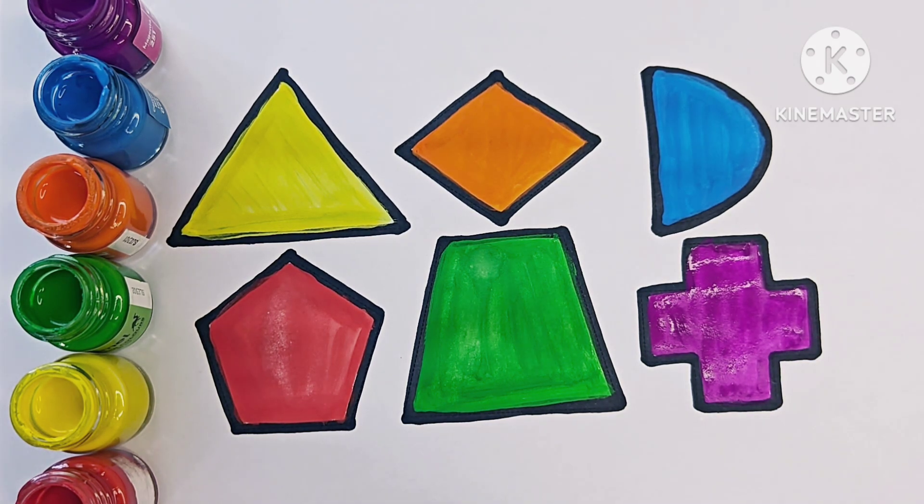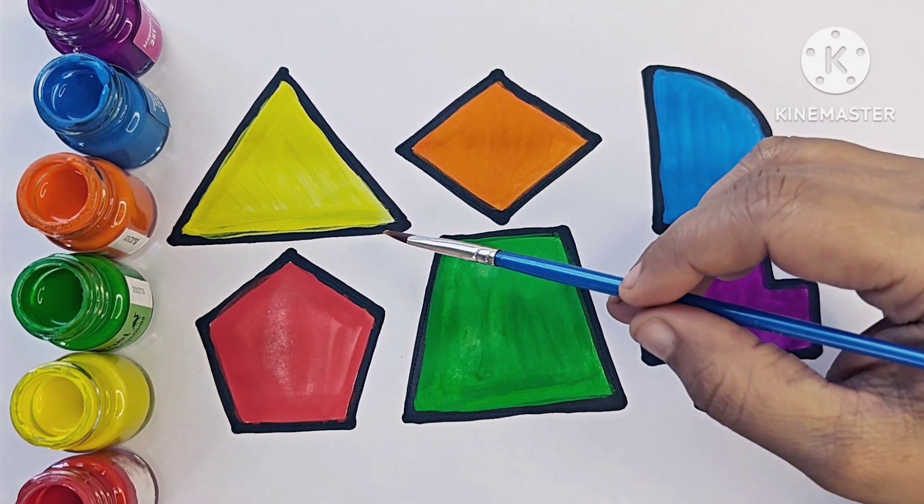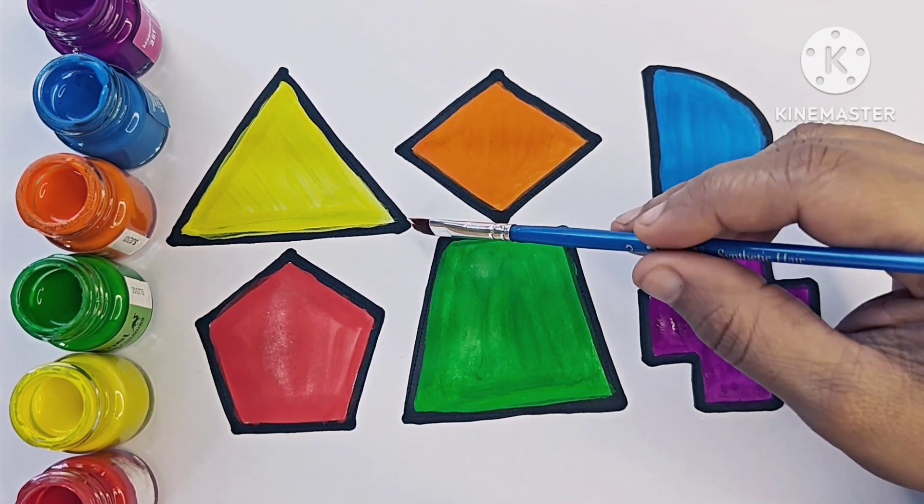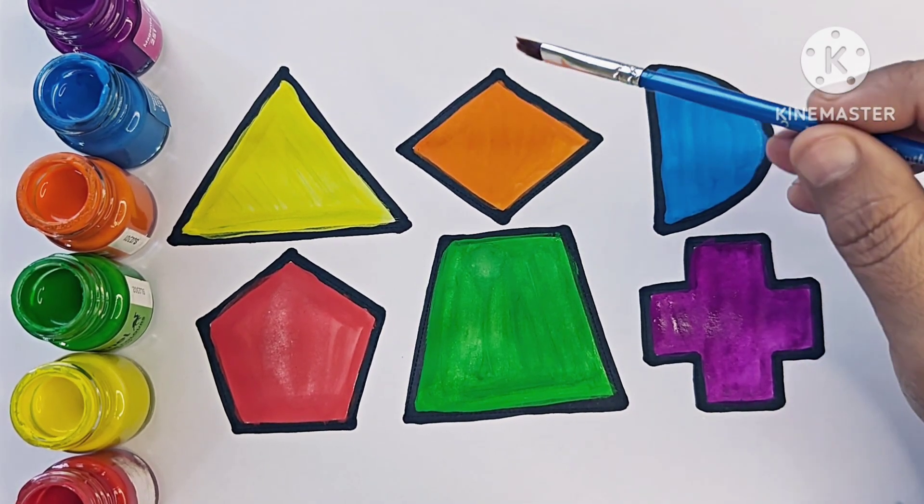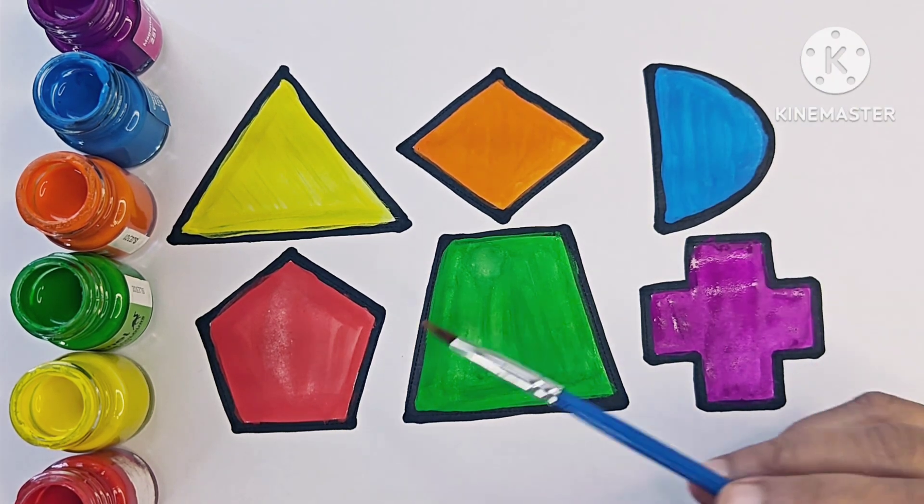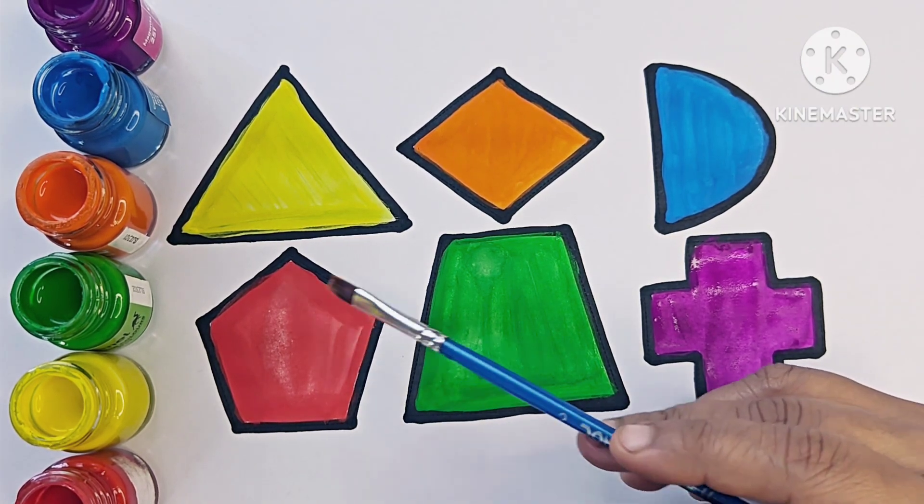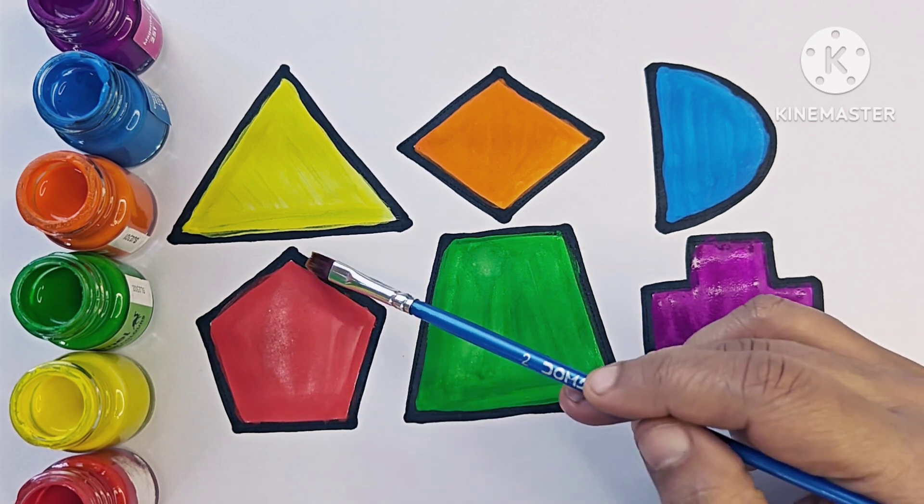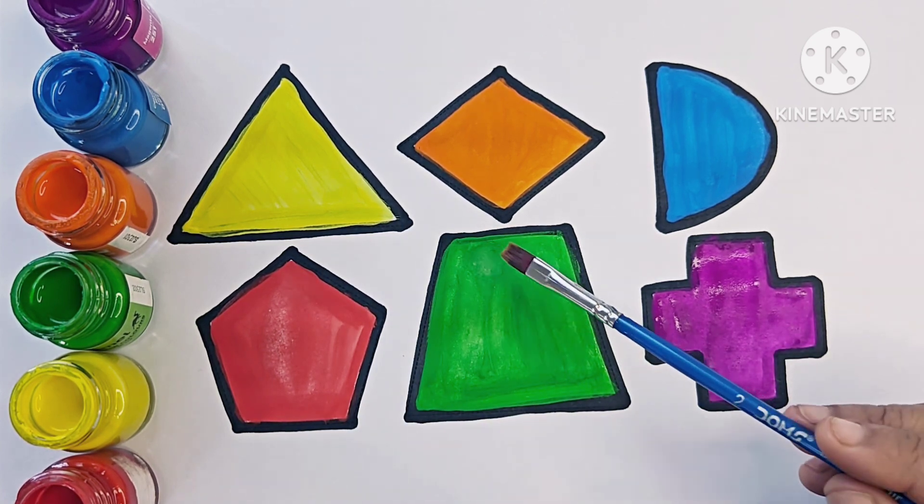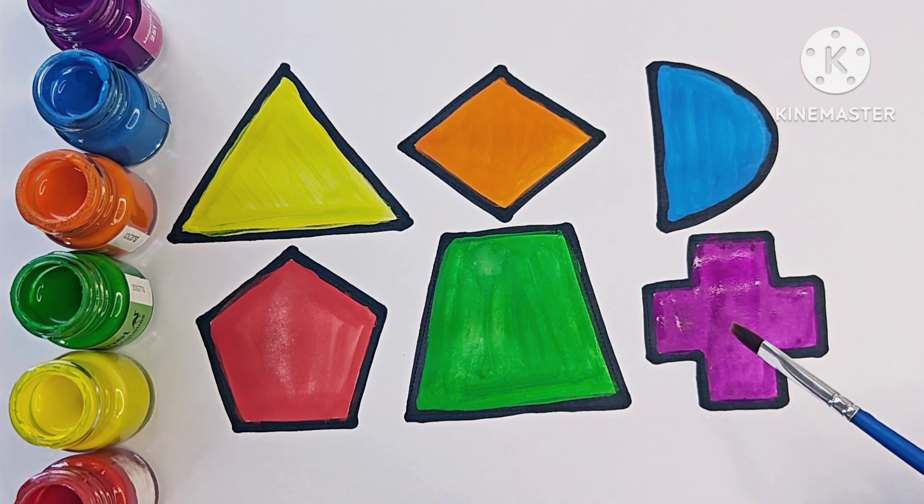Cross. Triangle, it has 3 sides, it is a 2D shape. Rhombus, it is also called diamond, it has 4 sides. This is half circle. This is pentagon, it has 5 sides: 1, 2, 3, 4, 5. It is trapezoid, it has 4 sides: 1, 2, 3, 4.